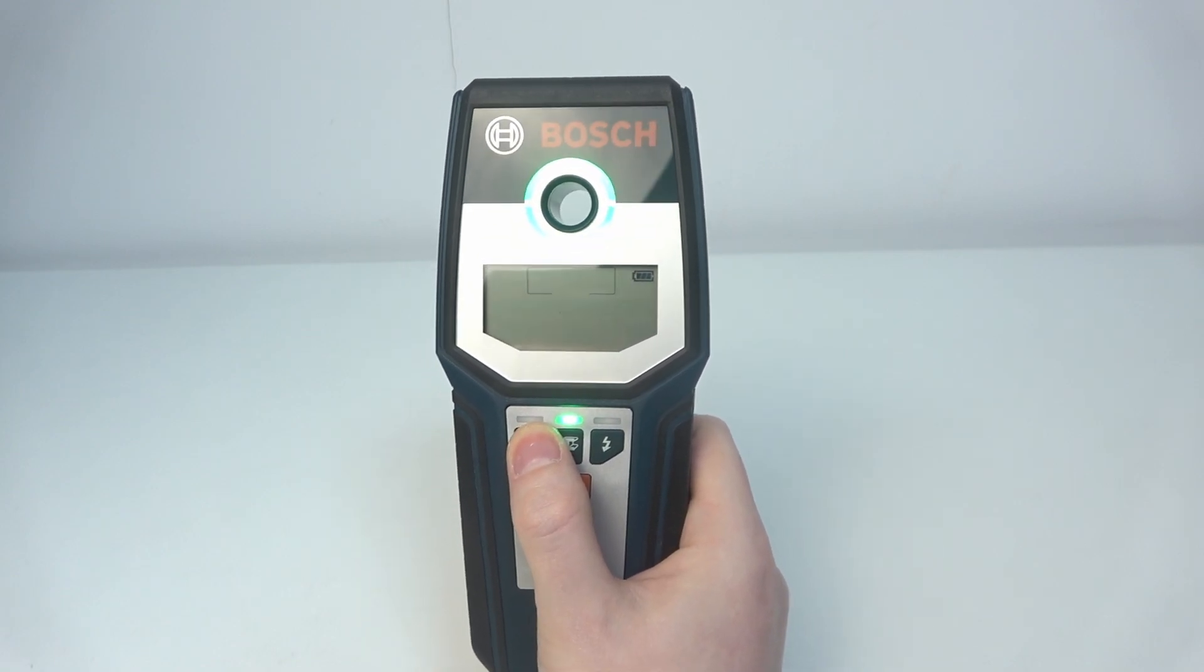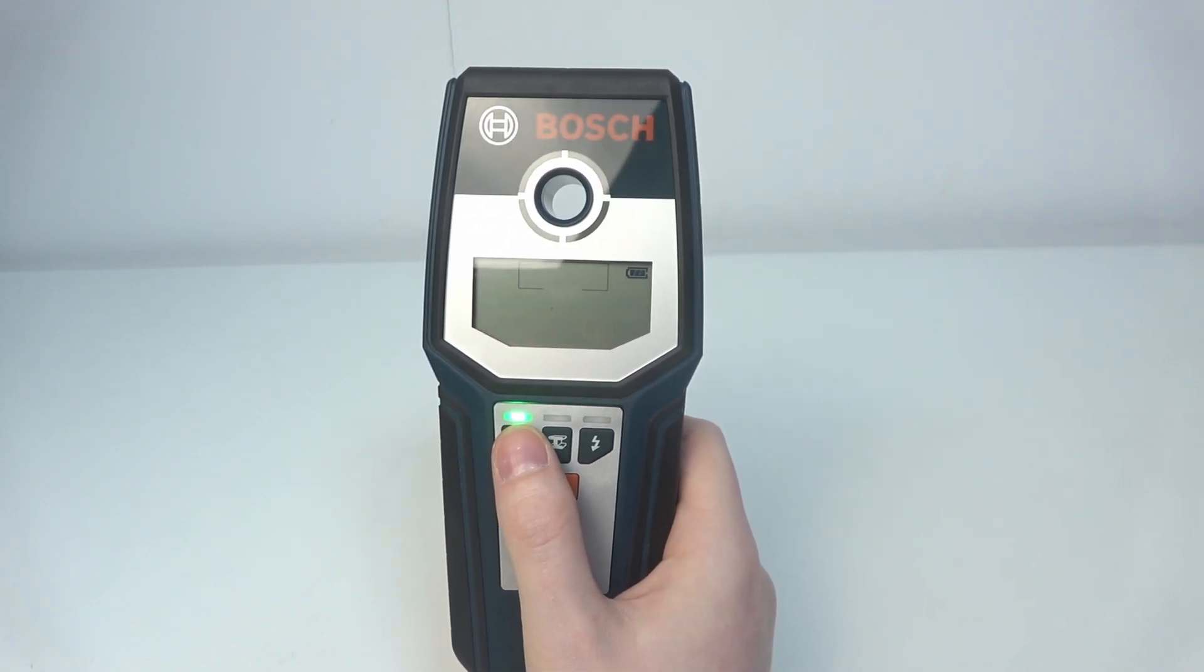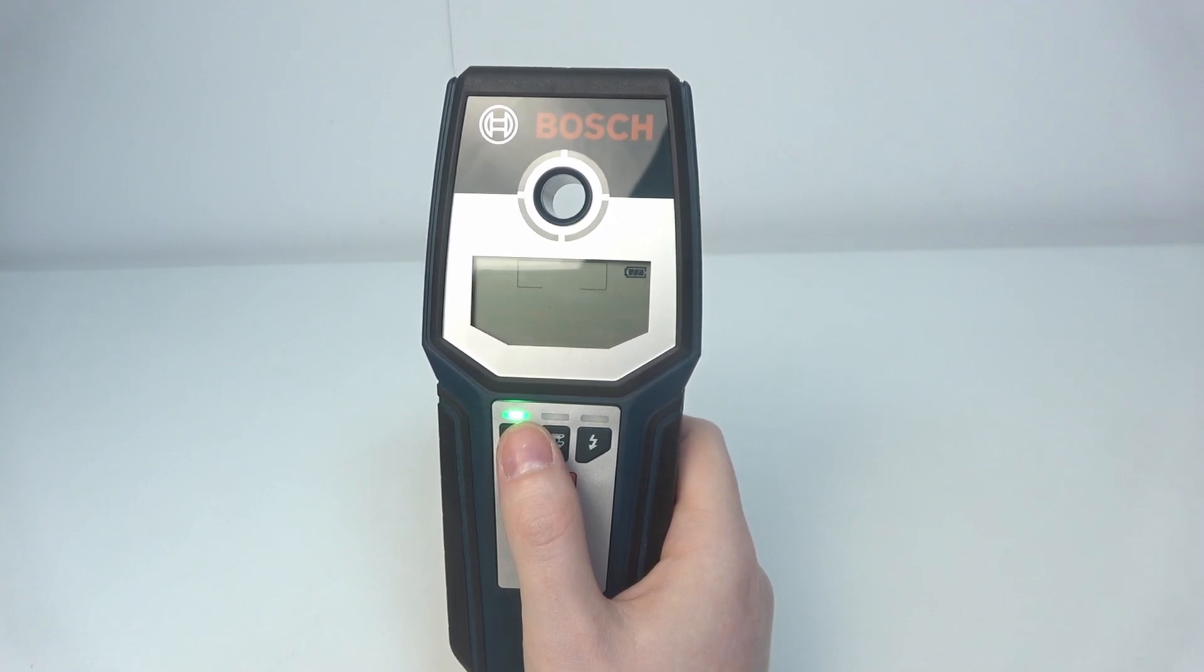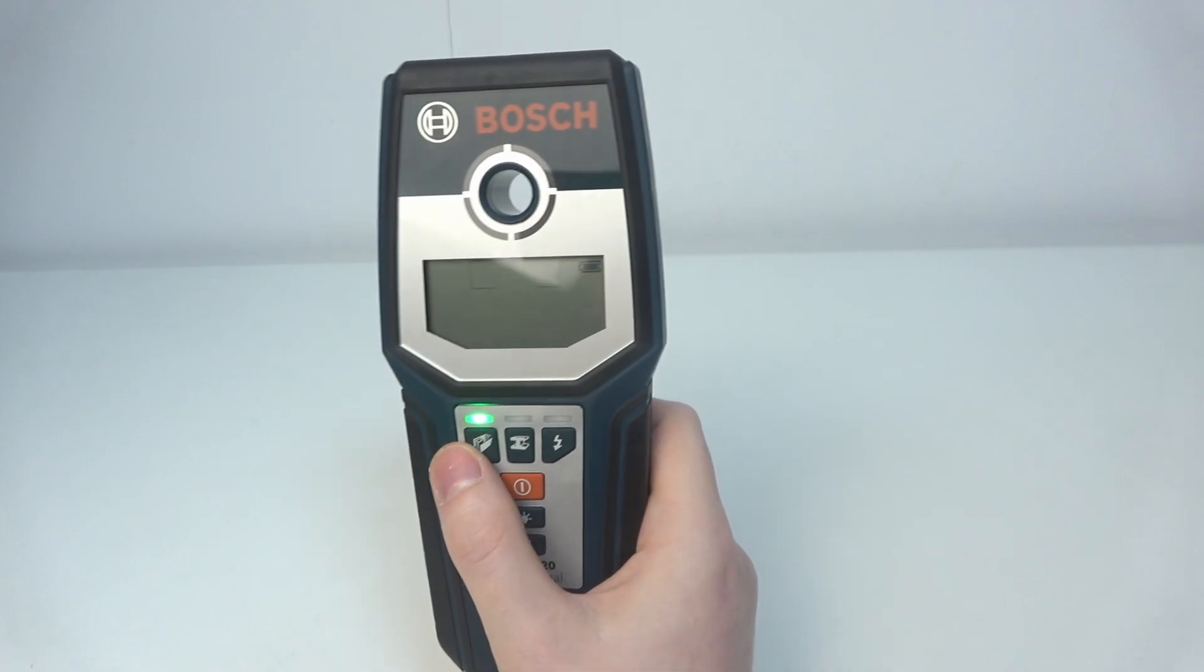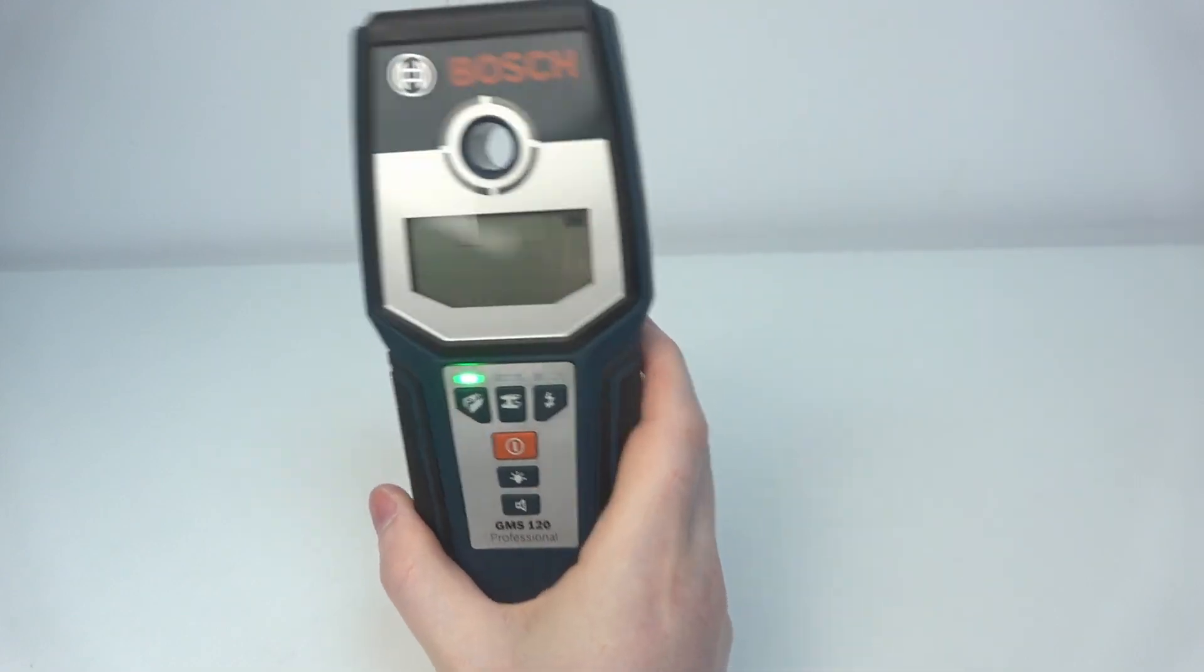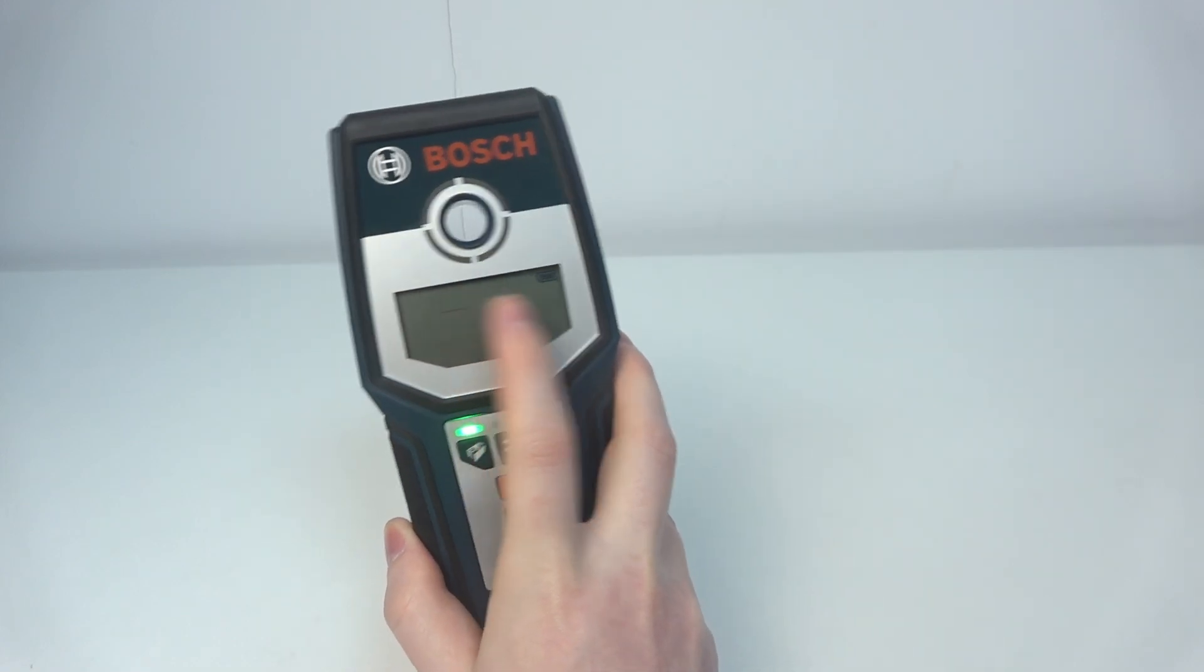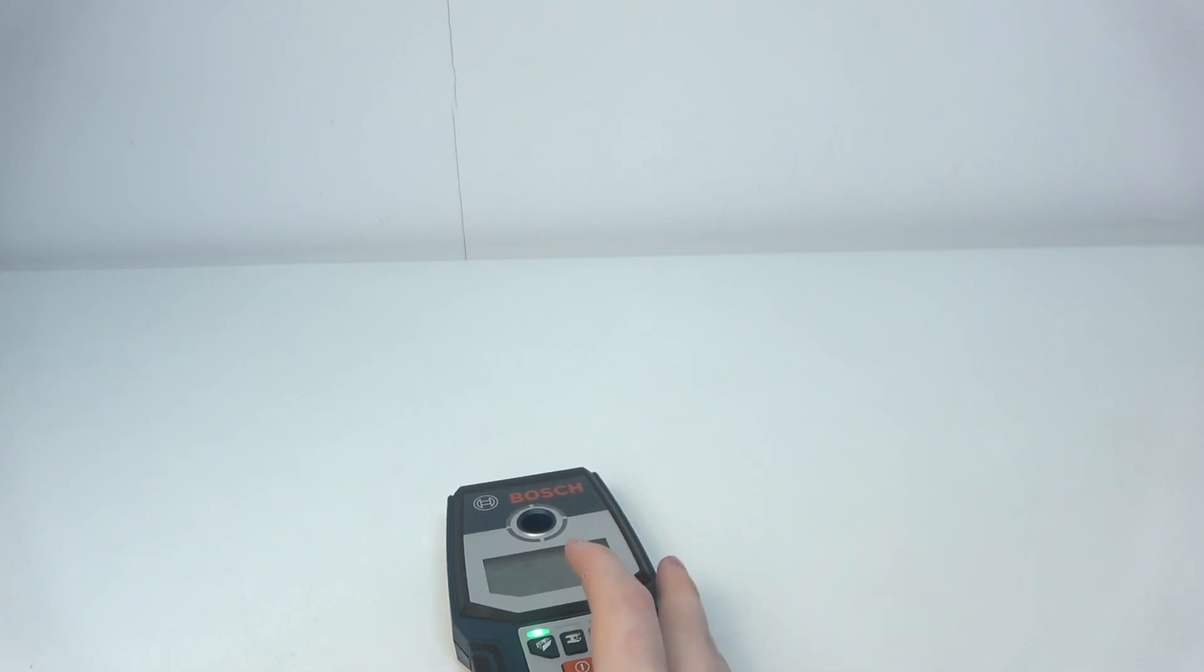First one is a drywall operating mode and it is designed for detecting wooden and metal objects in the drywalls. And also when it detects something on the wall it will show some of the icons right here on the HUD and you can find all of the icons meaning in the instruction.